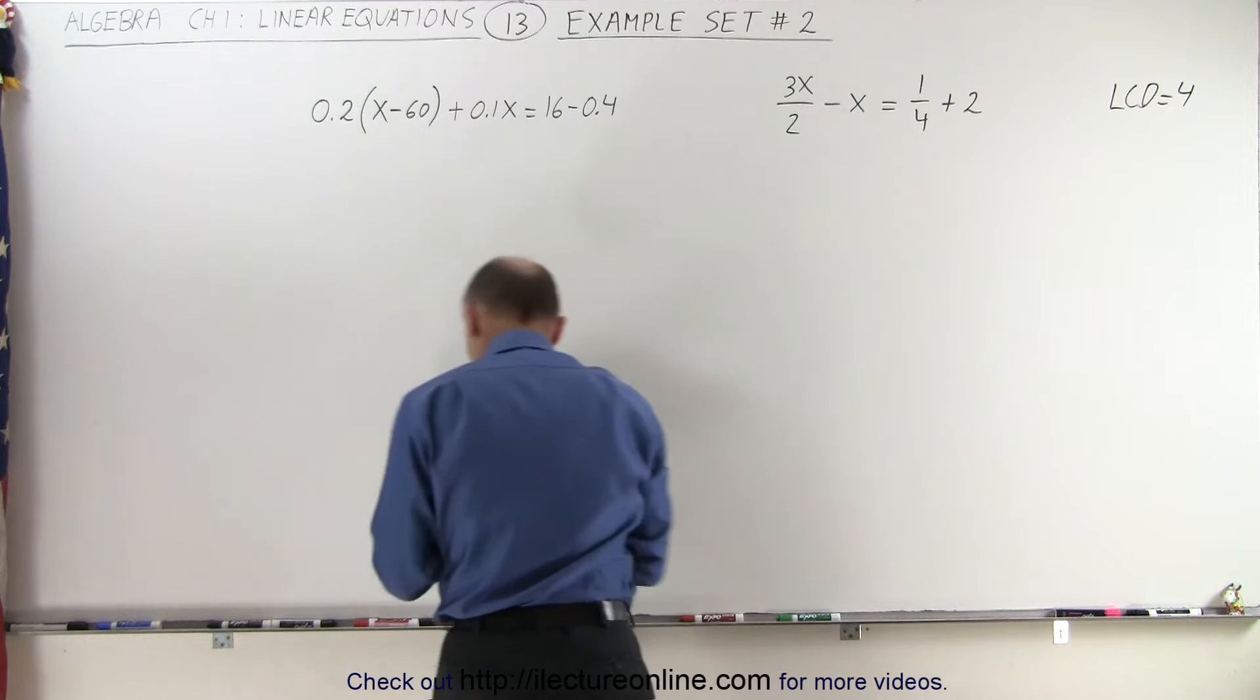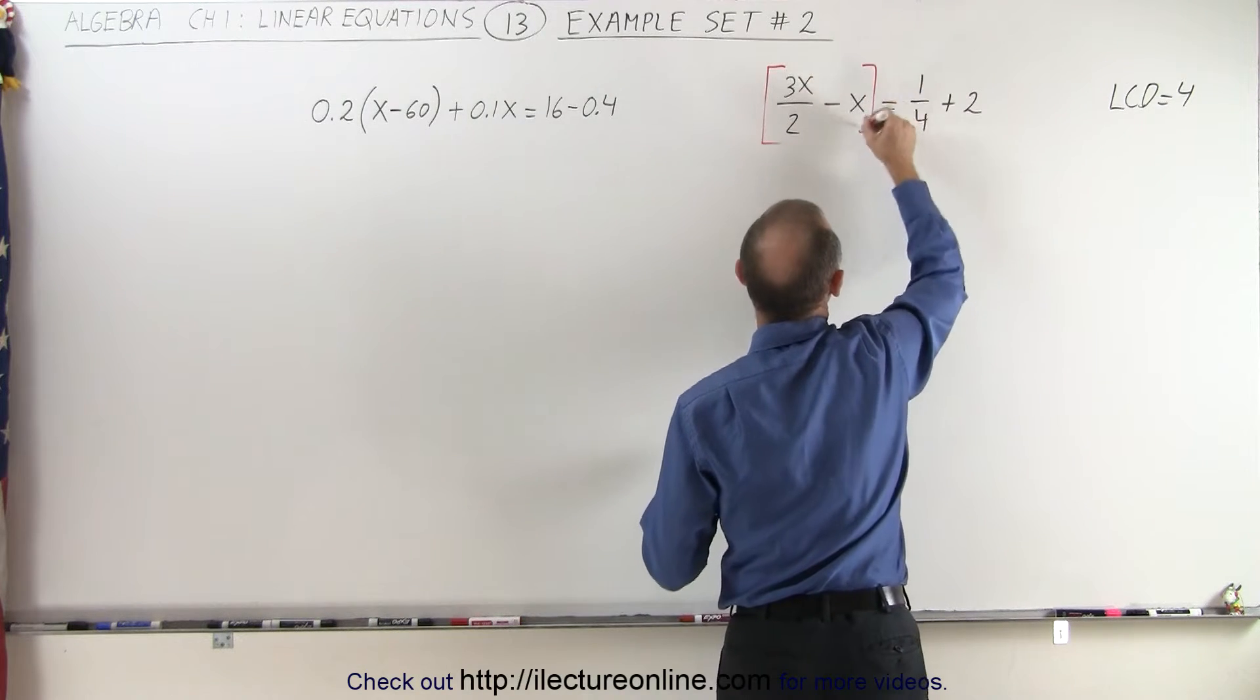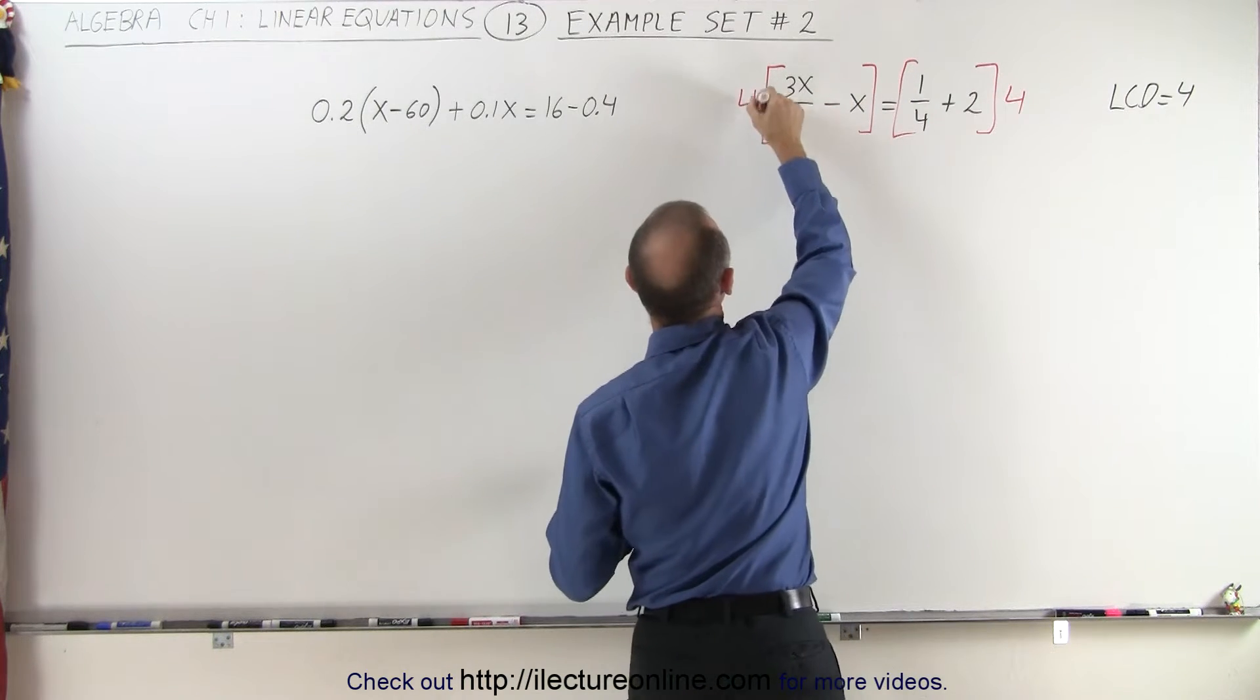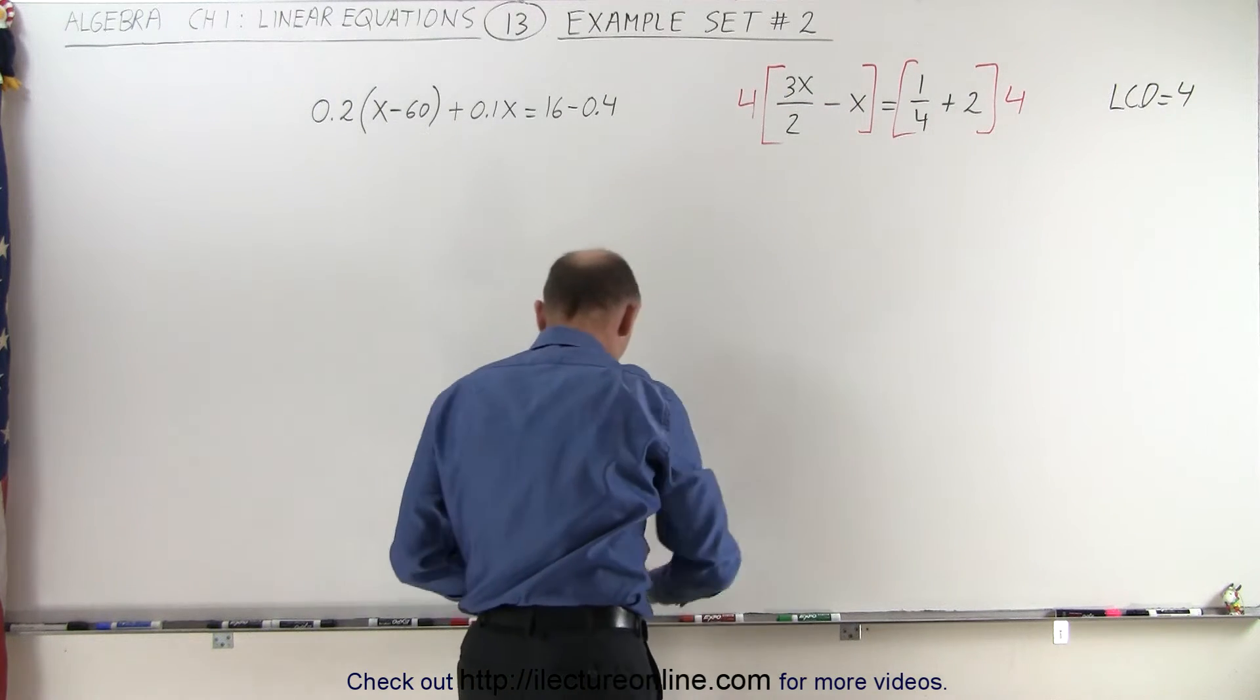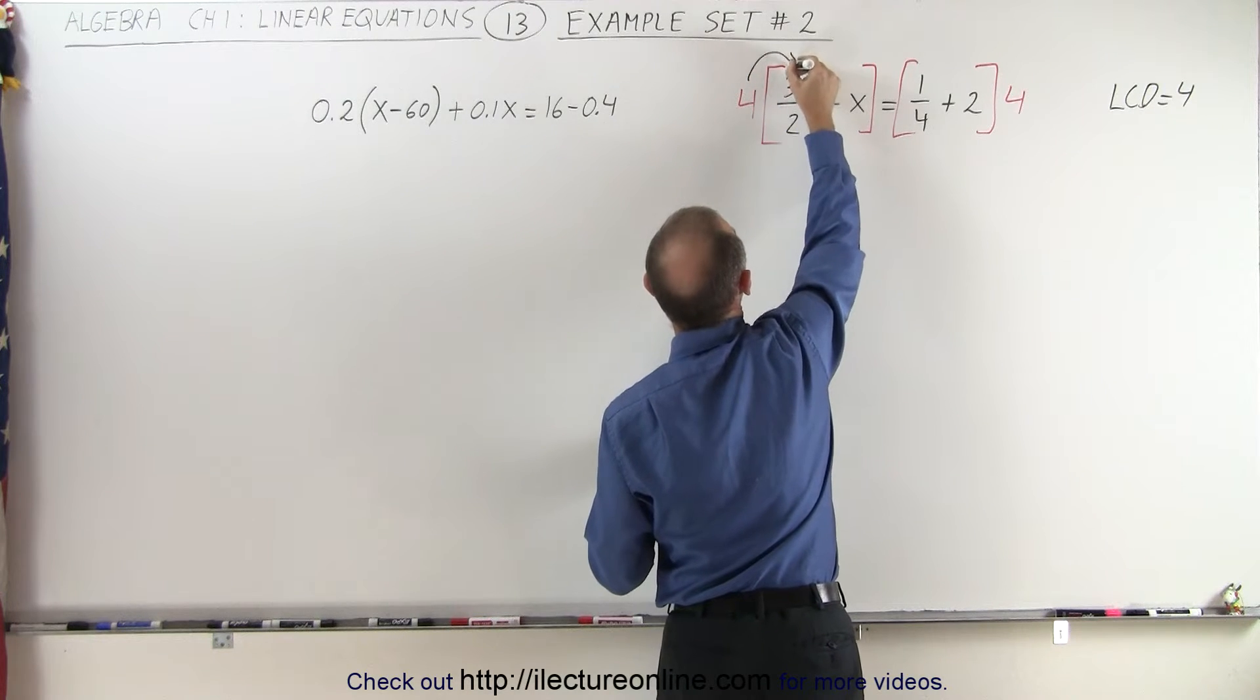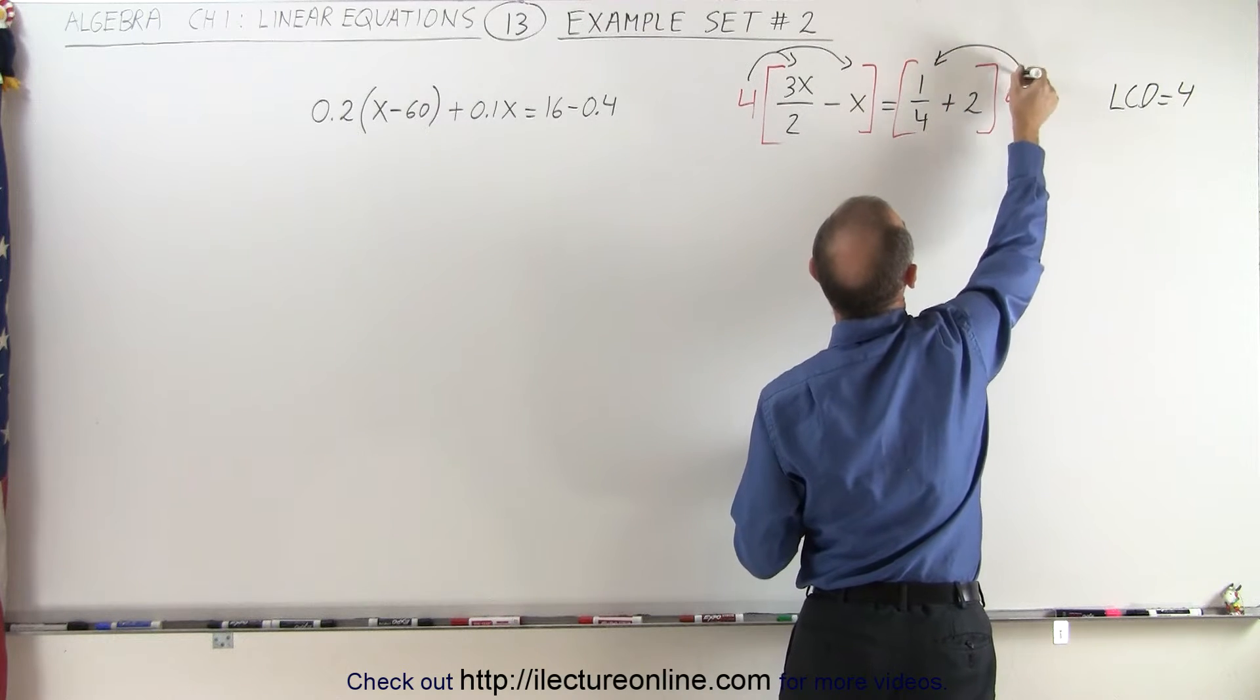That means we must multiply both sides of the equation by the lowest common denominator. Now when we multiply, we use a distributive property, so we're going to multiply the 4 times the first term and the second term. Same on this side, we're going to multiply these together.